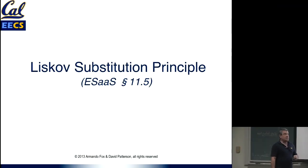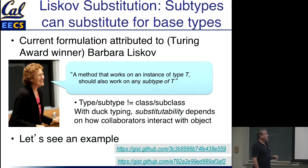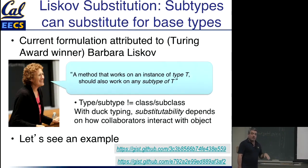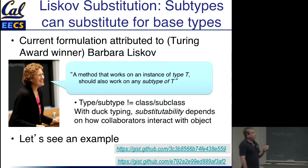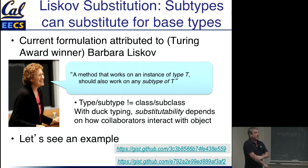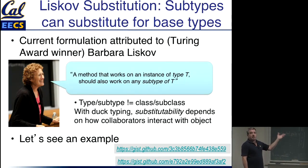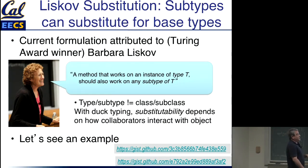The first of which is Liskov substitution, so-called because Barbara Liskov, who won the Turing Award in 2008 for her work on abstract types, is generally credited with the formulation of what we now sort of take for granted as inheritance in object-oriented languages.